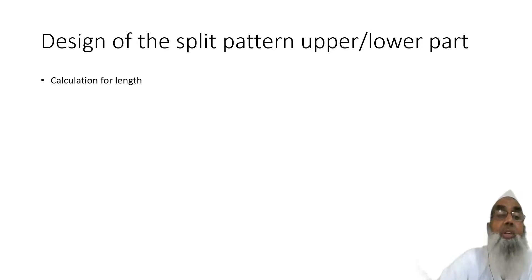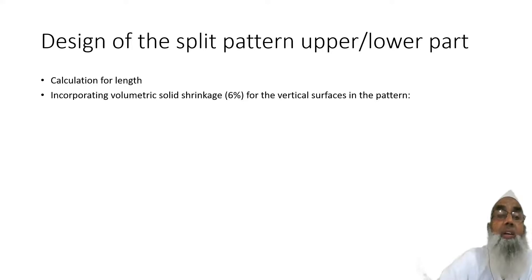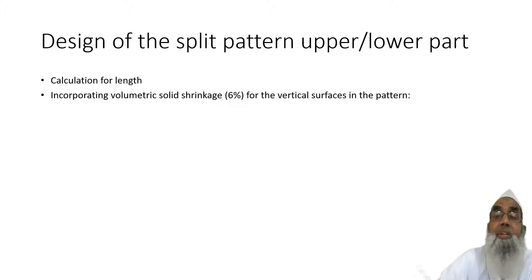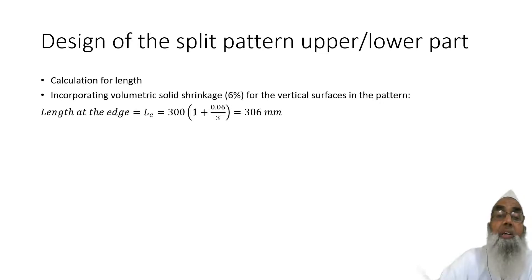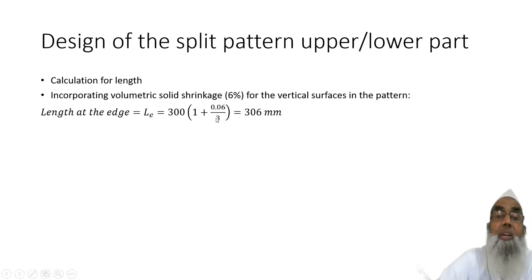First of all, we need to calculate the length of the pattern. For the solid shrinkage of 6% applied to the vertical surfaces in the pattern, the length of the edge is calculated. Since 6% is the volumetric shrinkage, we will measure in linear dimension, and therefore we need to divide it by 3. This gives us the particular equation for the linear shrinkage allowance.